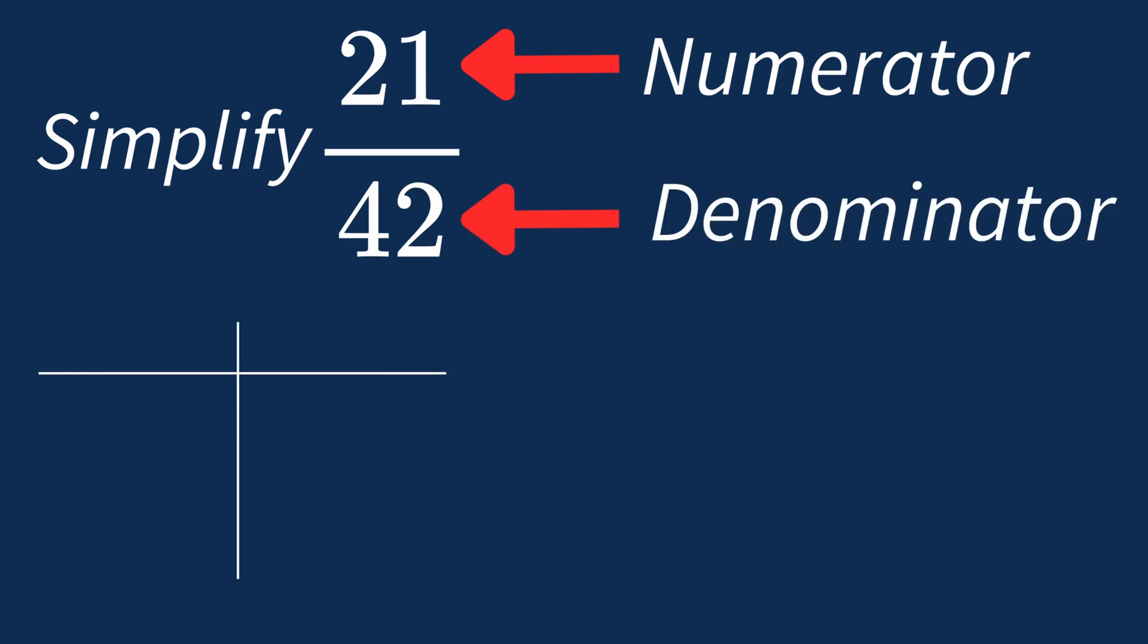First, let's list out the factors for each. For 21, the factors are 1, 3, 7, and 21.